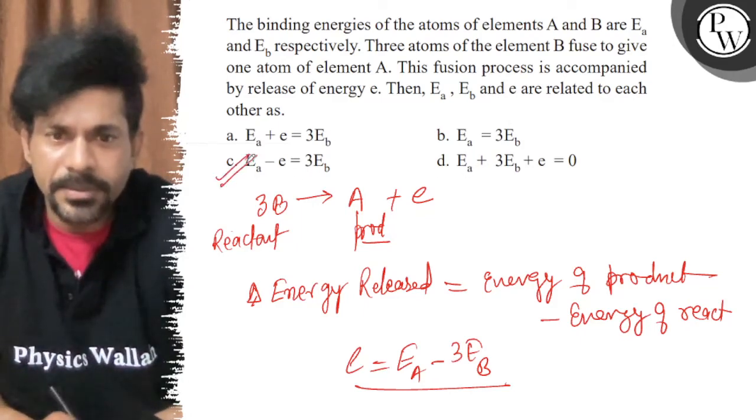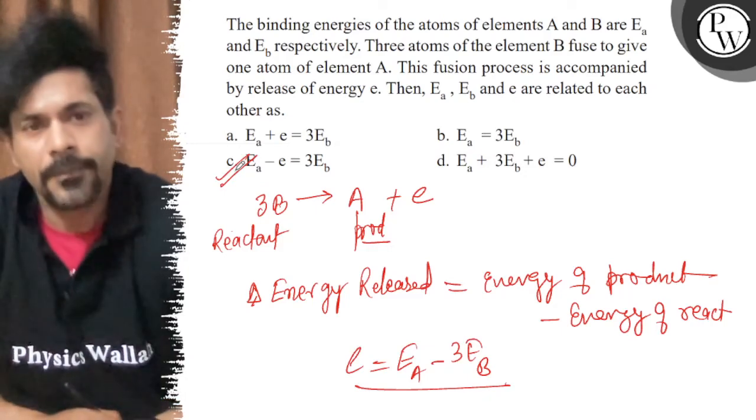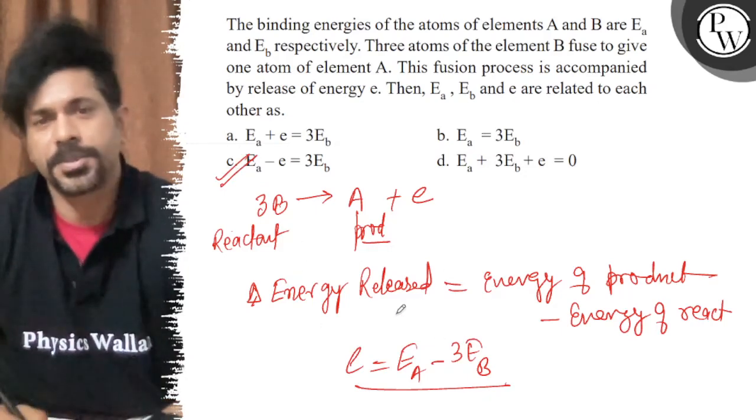e plus 3Eb is equal to Ea. So option D will be the answer. You can check the options. All the best!